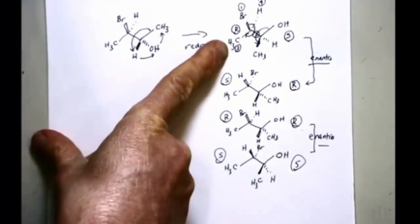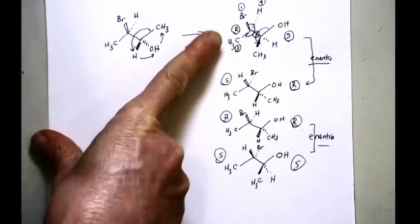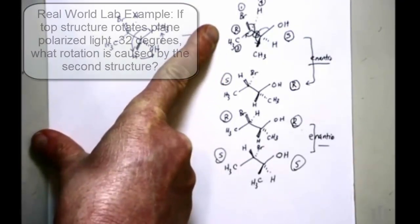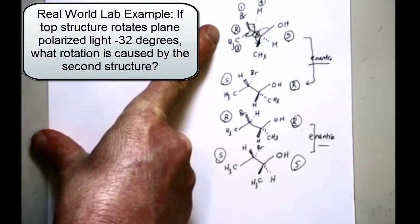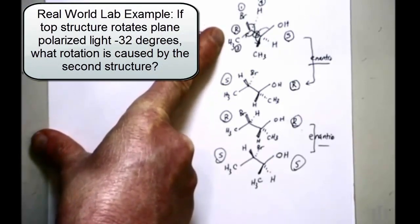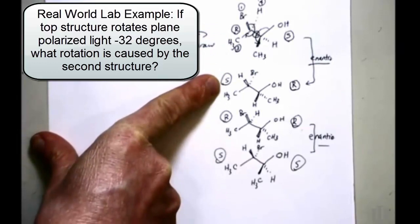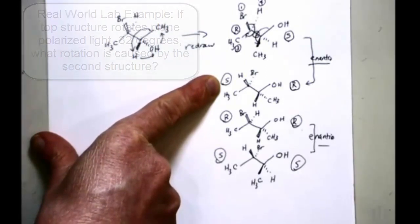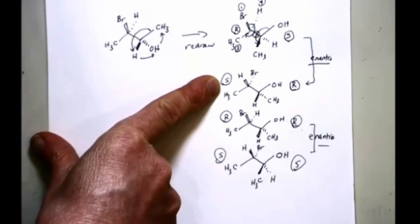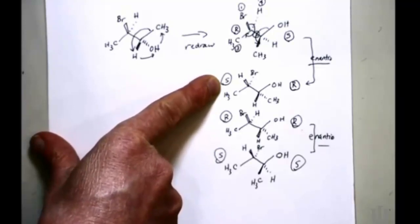So the first structure, RS, second structure, SR. Top structure has specific rotation of minus 32 degrees. What's the specific rotation for the next one? Top one is minus 32 degrees. Plus 32 degrees is the other one, equal but opposite, because they're enantiomers. One rotates plane polarized light one direction, the other the opposite, but equal amounts.